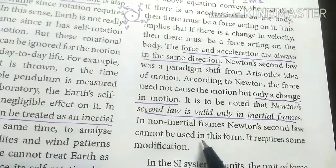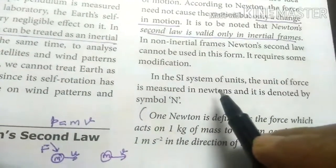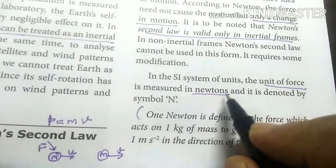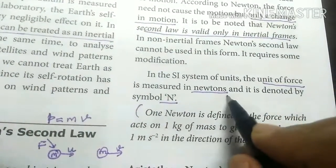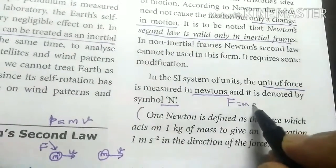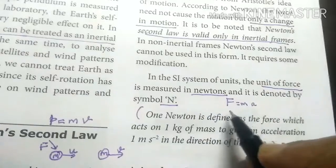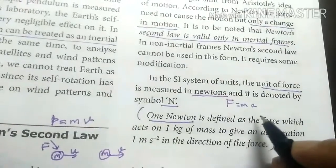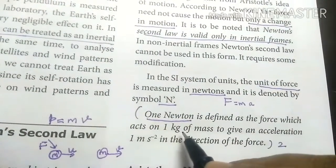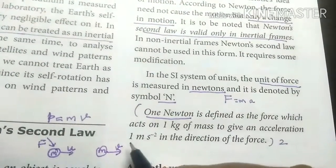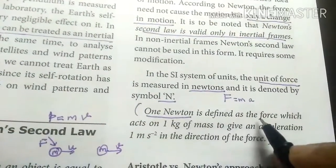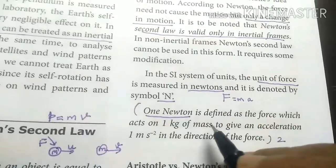Newton's second law gives us a modification — the unit of force. Newton, symbol capital N. One Newton is defined as the amount of force which acts on a mass of 1 kilogram to give an acceleration of 1 metre per second squared in the direction of force. That quantity of force is called 1 Newton.